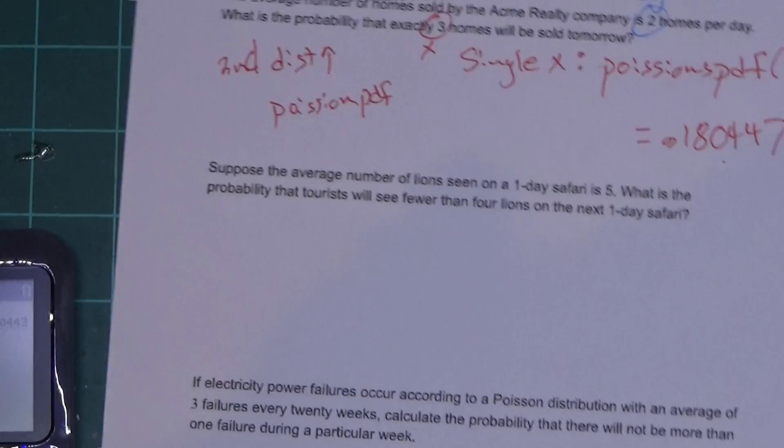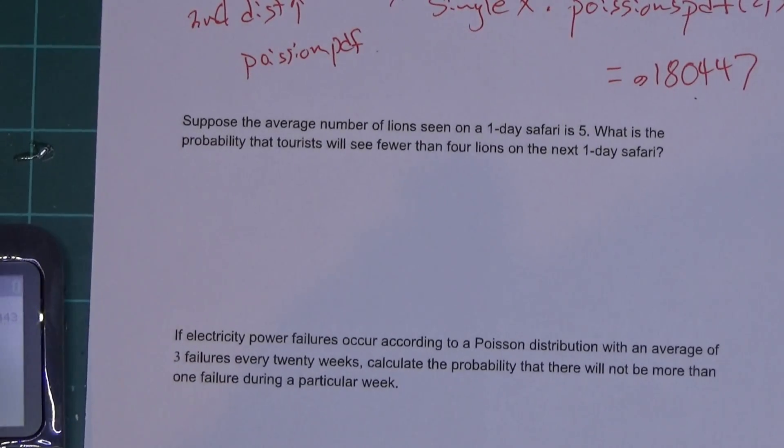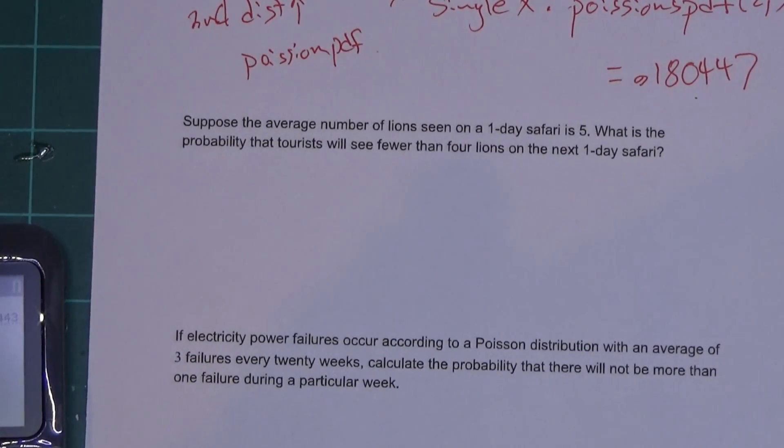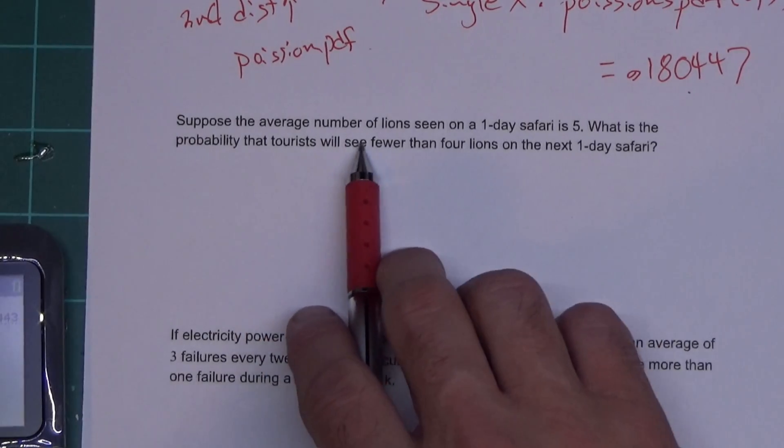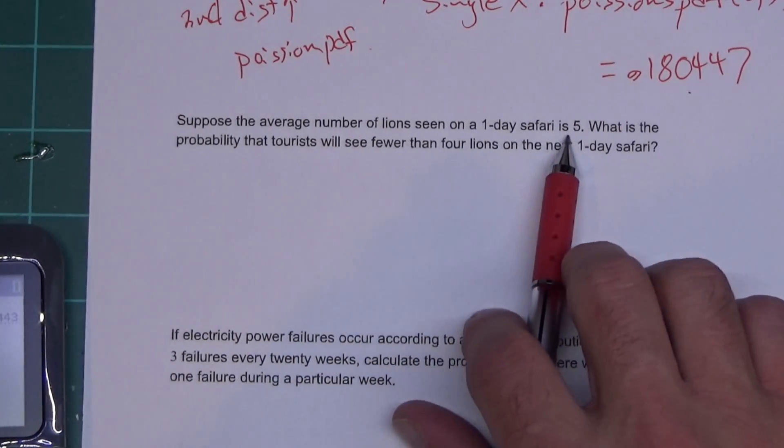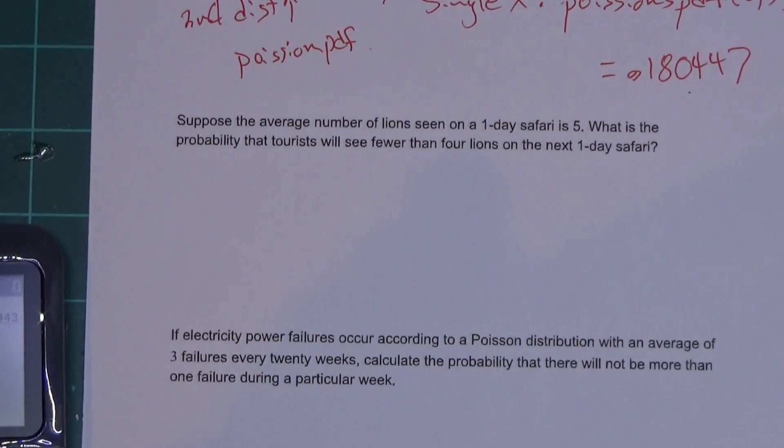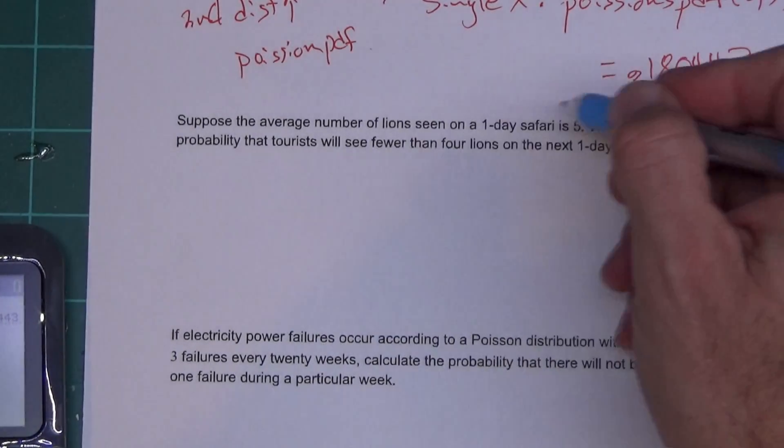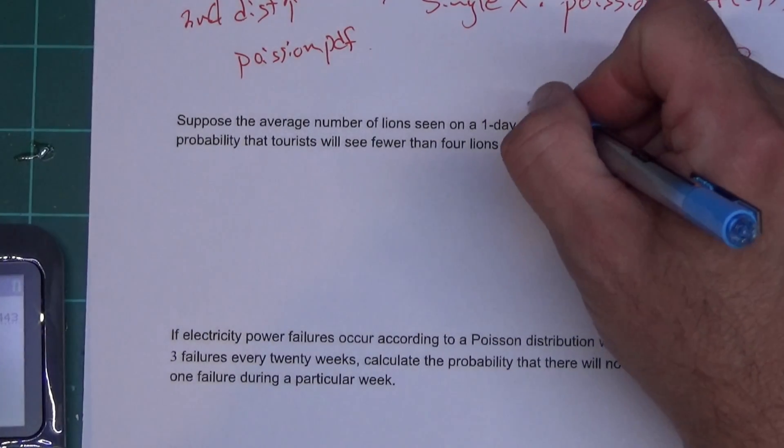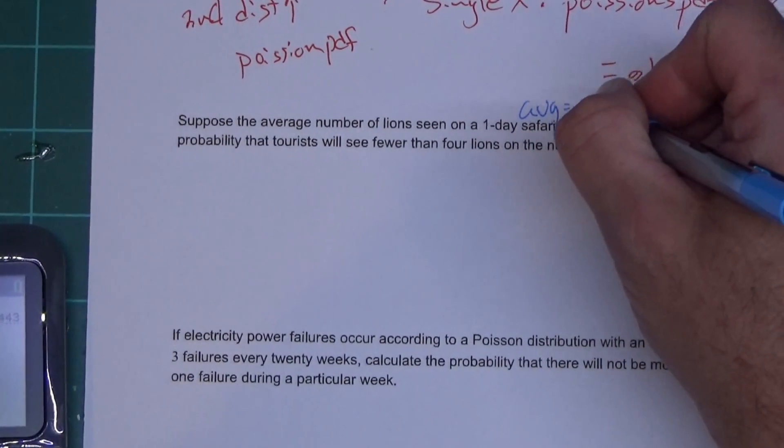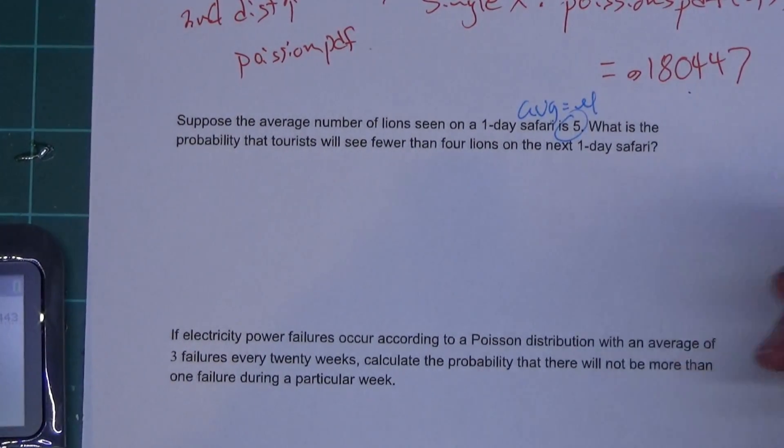Let's go to the next one. Suppose the average number of lions seen on a one-day safari is five. What is the probability that tourists will see fewer than four lions on the next one-day safari?